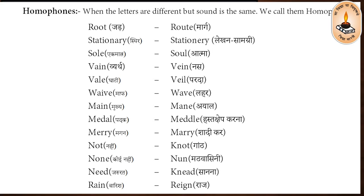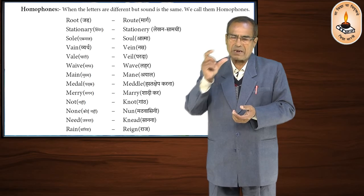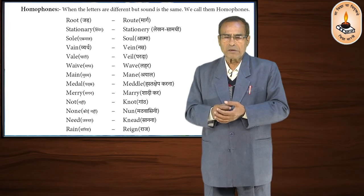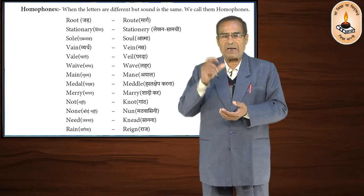Further, you have words given here in pairs having the same sound. 'Mane' means 'mukh', and 'mane' — that is 'gardhan ke baal' — the hair of a neck. 'Medal', that is 'padak', and 'meddle', meaning 'badha dalna' — to interfere.